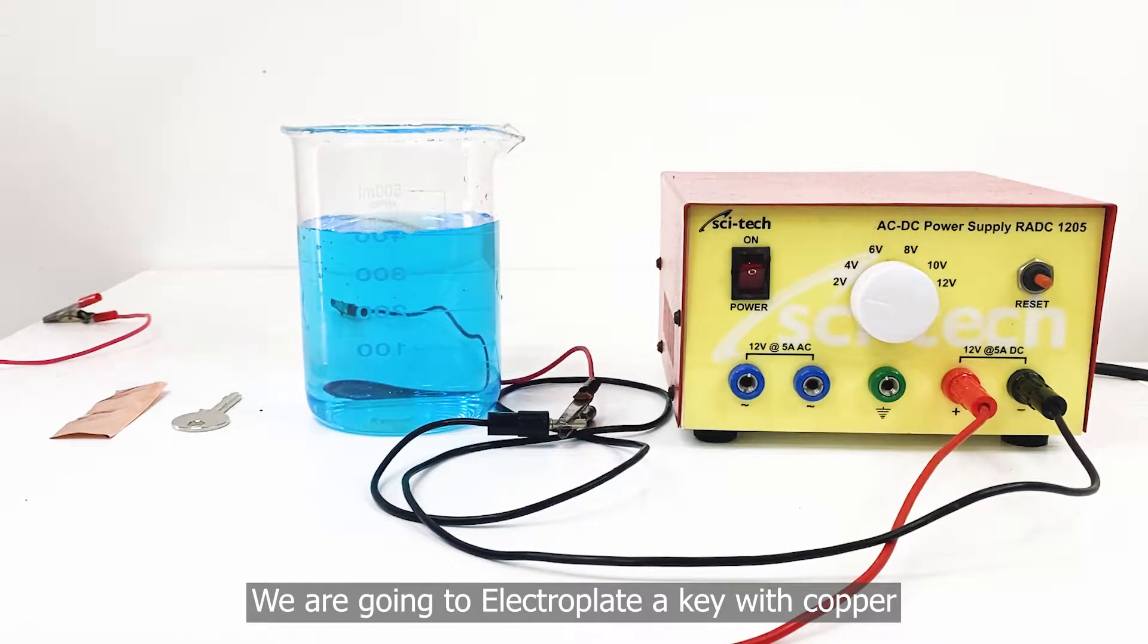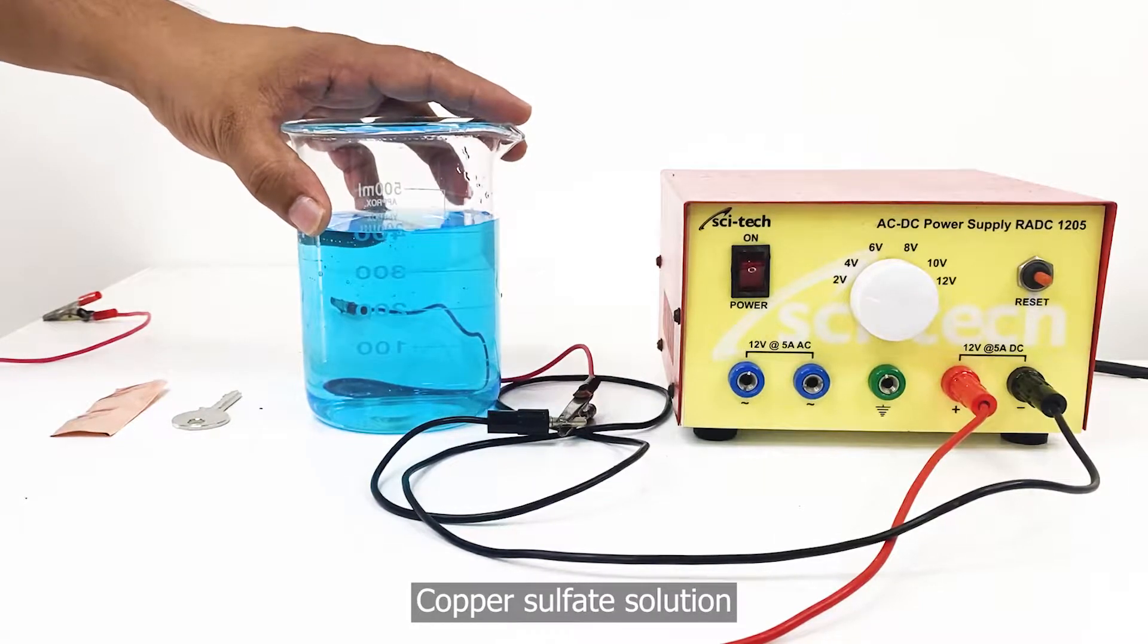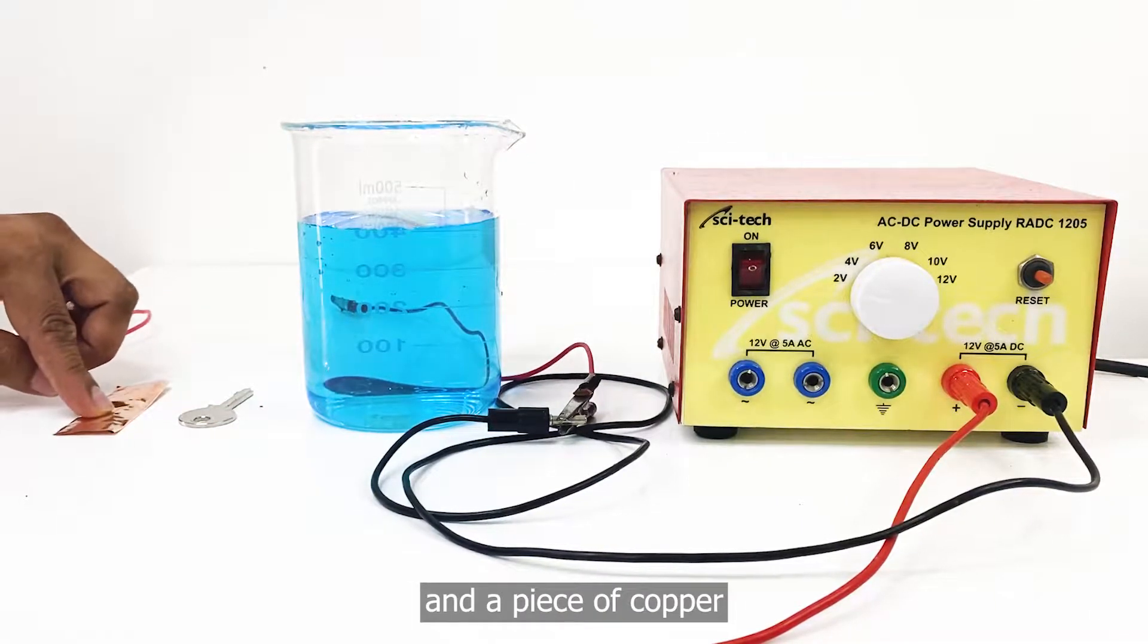We are going to electroplate a key with copper. We need a DC power supply, copper sulfate solution, a key, and a piece of copper.